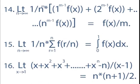Here are some more identities for different indeterminate forms of functions. Fourteenth, limit n tends to infinity of (1/n^m) into [1^(m−1)·f(x) + 2^(m−1)·f(x) + ... + n^(m−1)·f(x)] is equal to f(x) upon m.